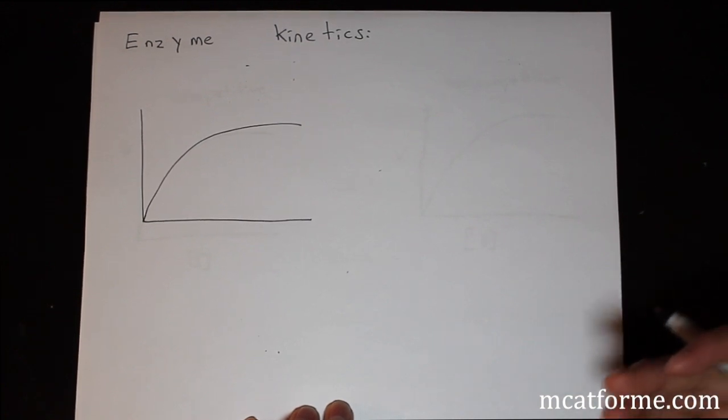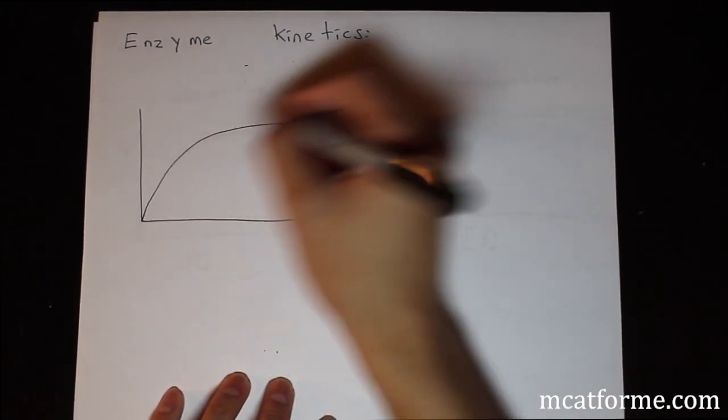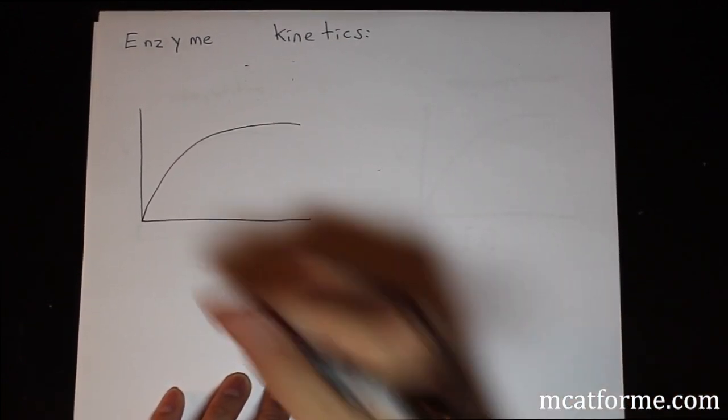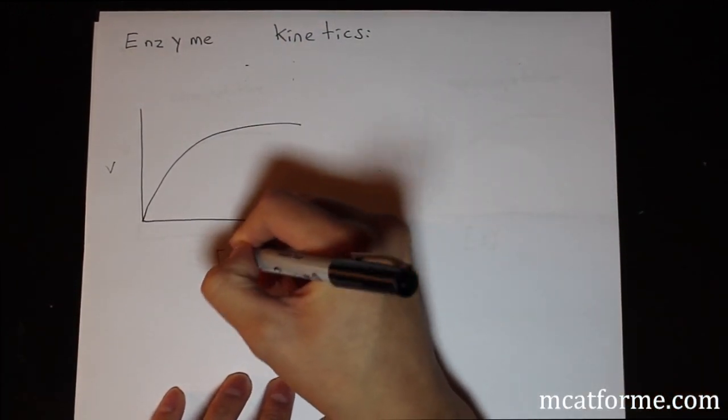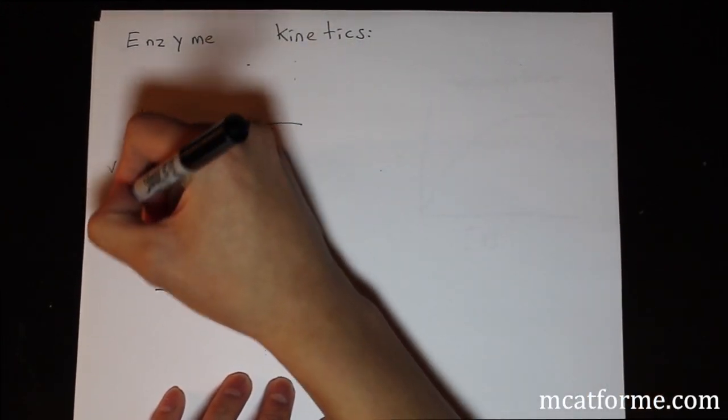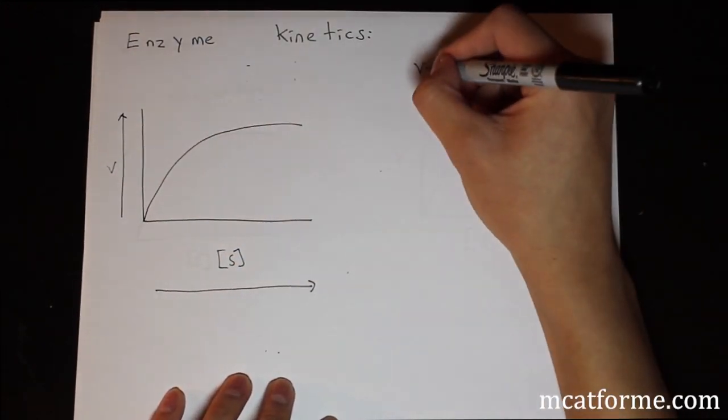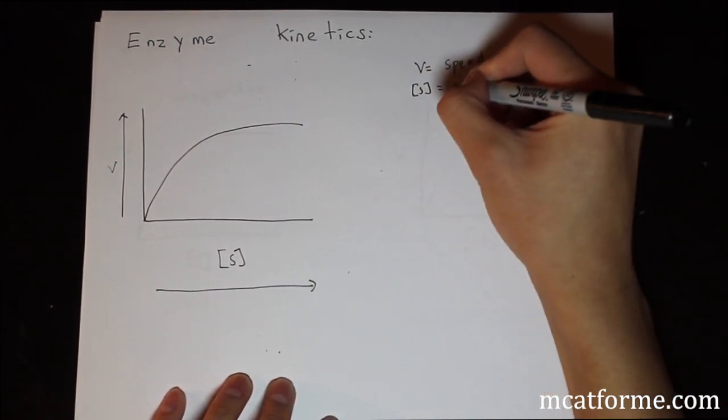Now that we've talked about how enzymes work and how basic regulation or inhibition works, we're going to look more into enzyme kinetics. We have this basic graph right here showing how the activity of an enzyme works. On this side we have V, and down here we have S. So S is the substrate concentration, and V is the speed.